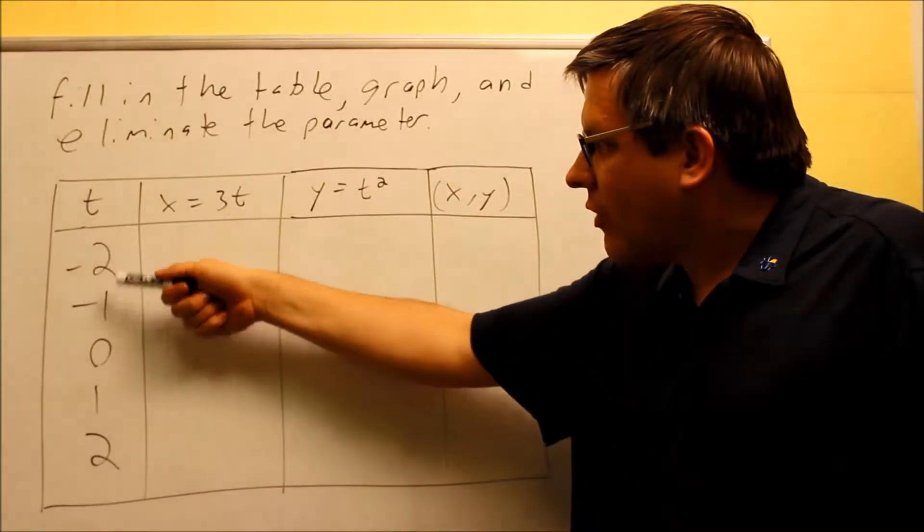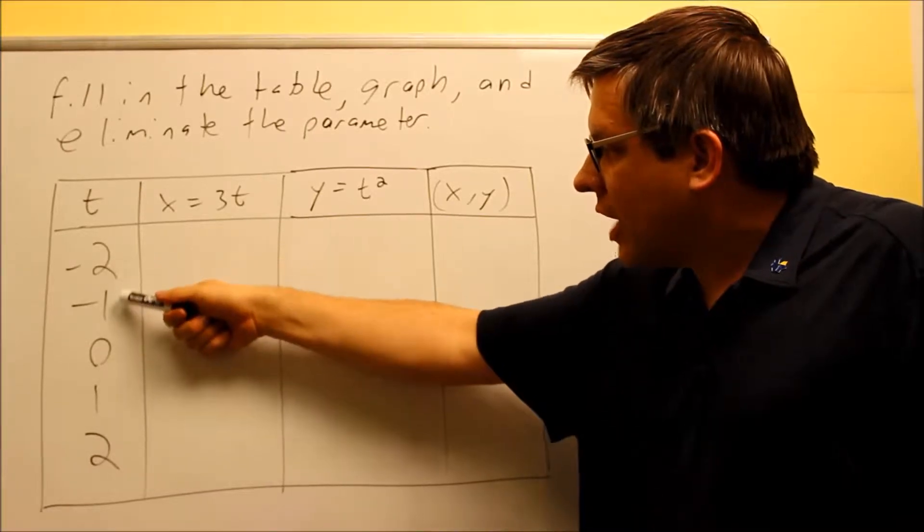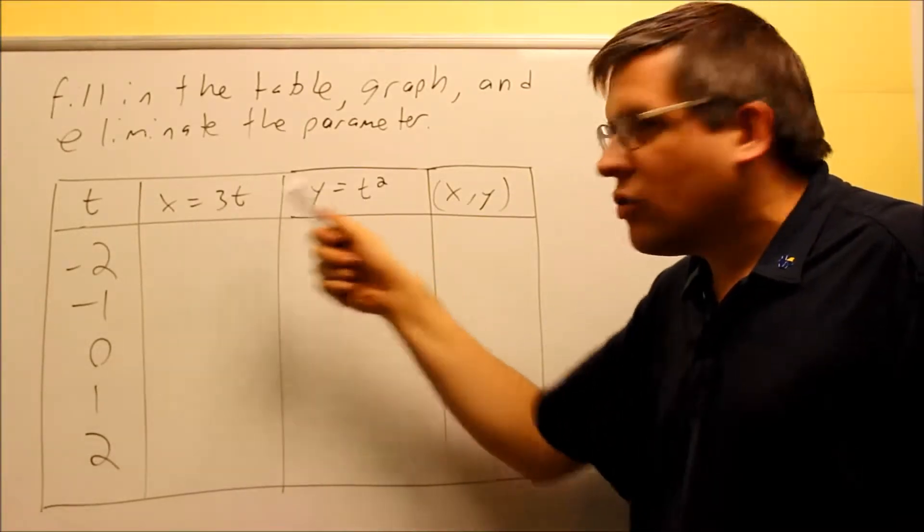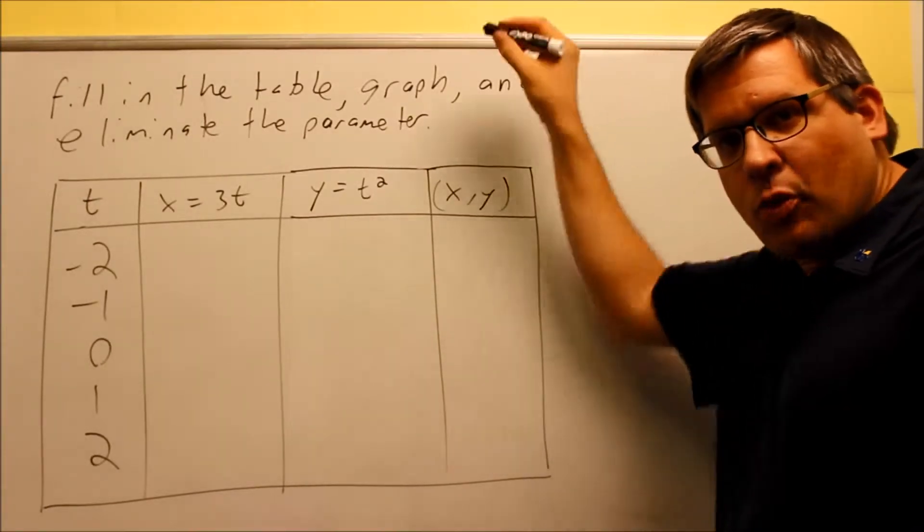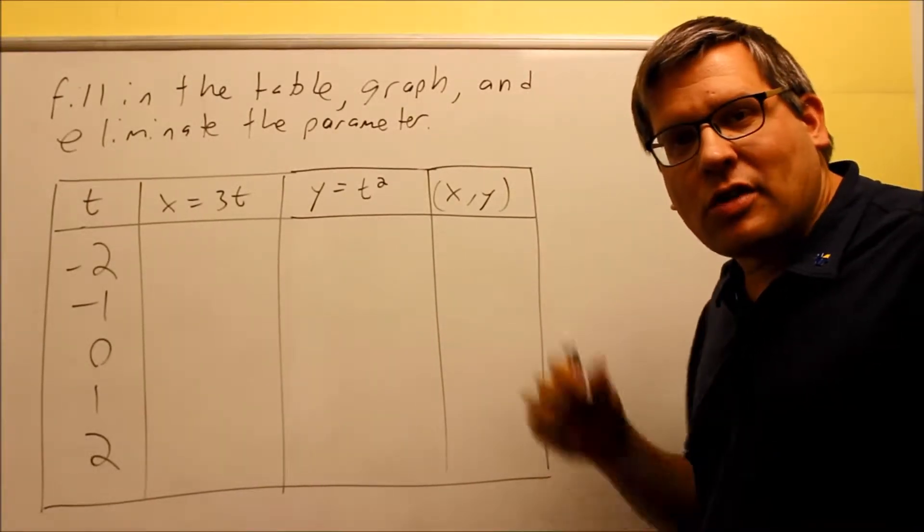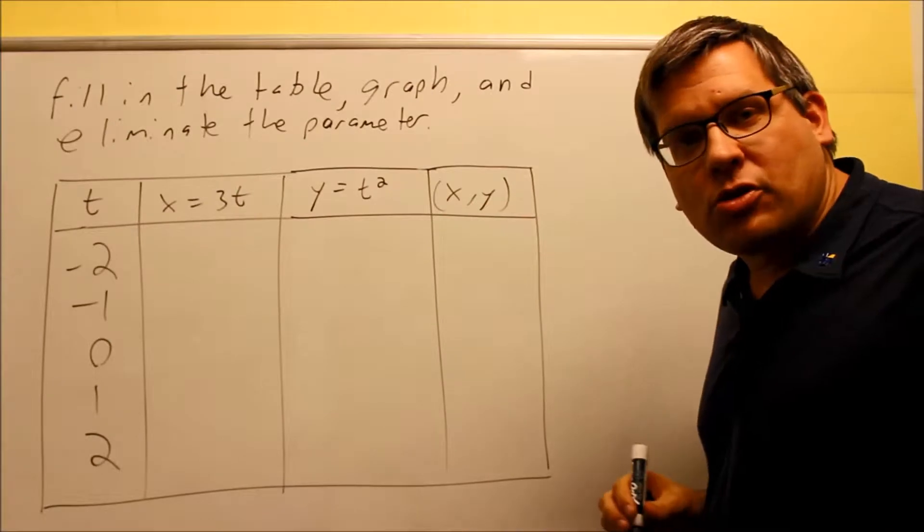So each time you have that goes up here, every time that you have something changing, that's going to give you a new position. So basically, as time goes on, the point's moving across the plane. That's the whole idea with parametric equations.